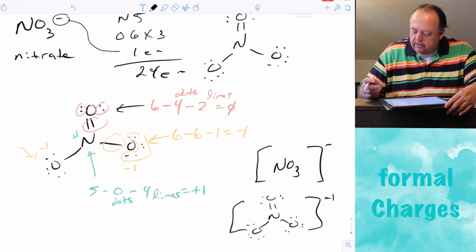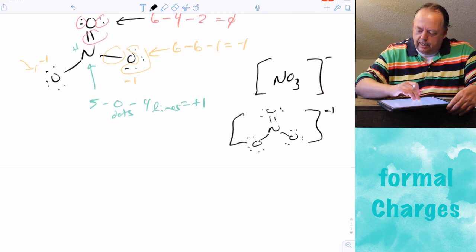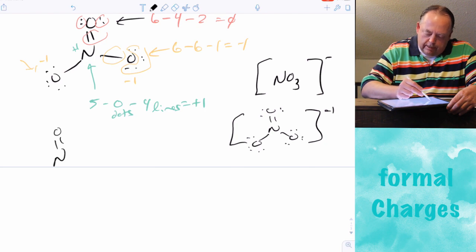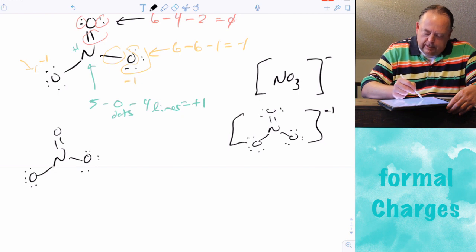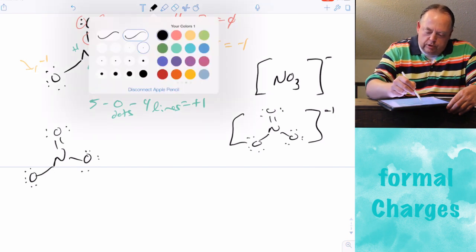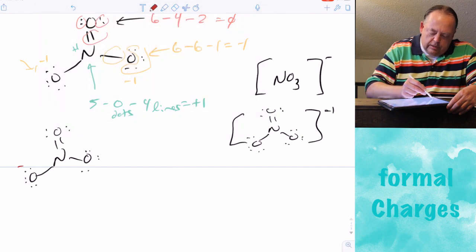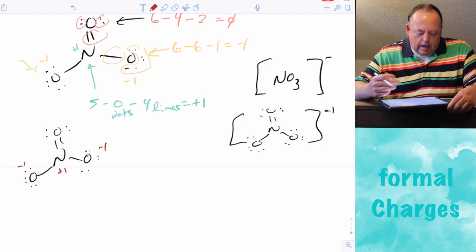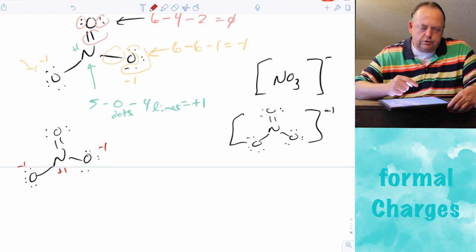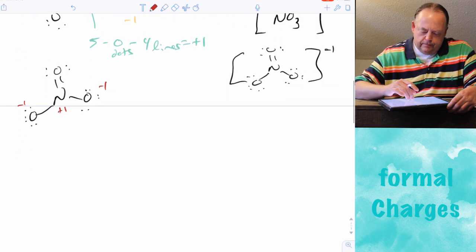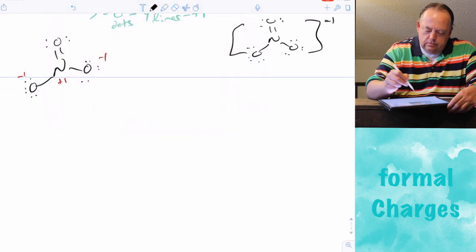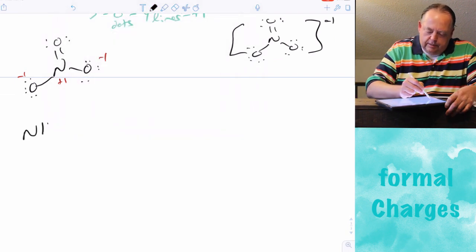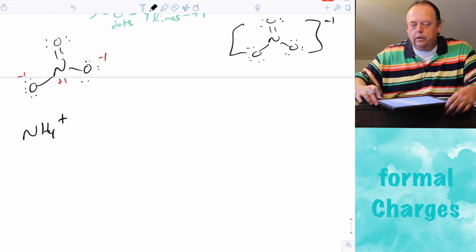The way I prefer you to draw it — and if you go into organic chemistry you'll have to do it this way — is to show the formal charges directly on each atom: negative one, negative one, and plus one. Any atom with a non-zero formal charge must have that charge shown when you draw the molecule.